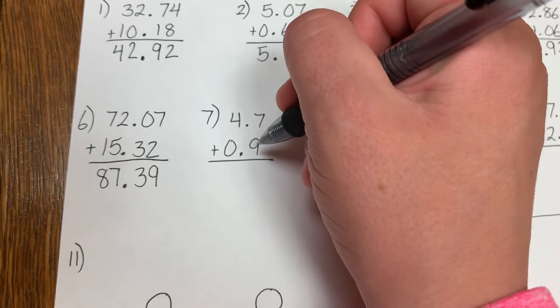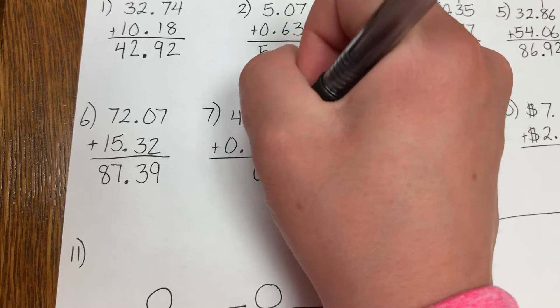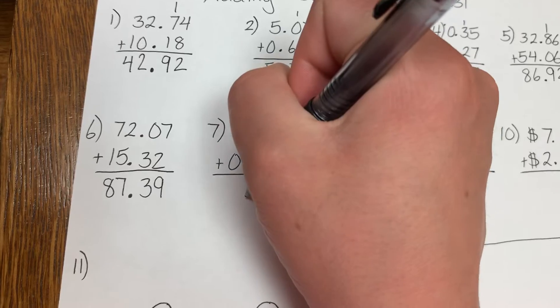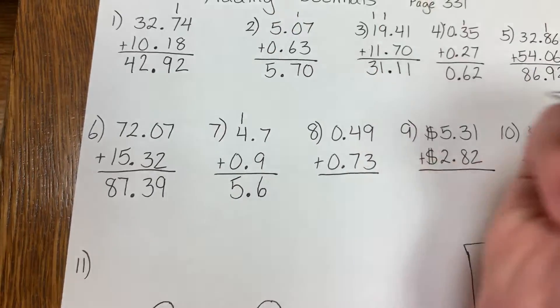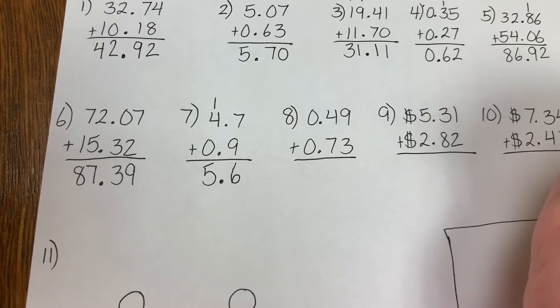Number 7: 7 plus 9 is 16. 6 down, carry the 1. Bring down the decimal. 1 plus 4 is 5. So your answer is 5.6, or 5 and 6 tenths.